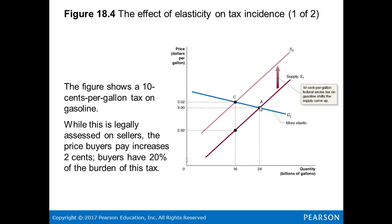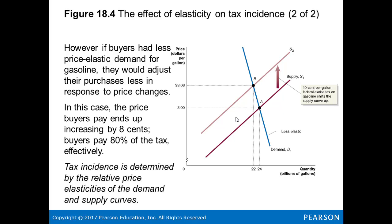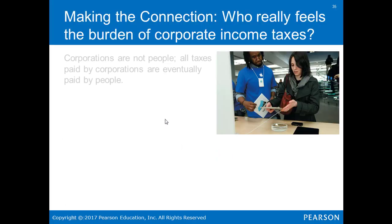However, if buyers had less price elastic demand for gasoline, they would adjust their purchases less in response to price changes. In this case, the price buyers pay ends up being 8 cents more, meaning they pay 80% of the effective tax. On a 10 cents per gallon tax, with this demand curve, they would pay $3.08 compared to the original $3.00. Therefore, tax incidence is relative to the price elasticities of demand and supply curves.